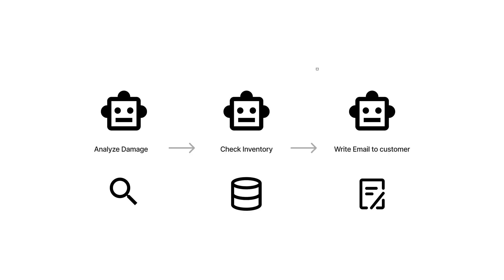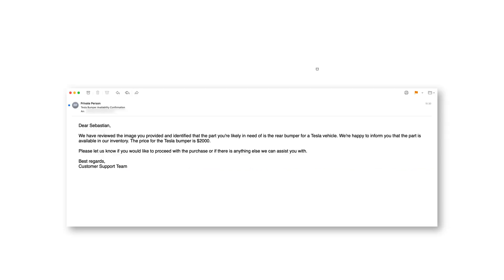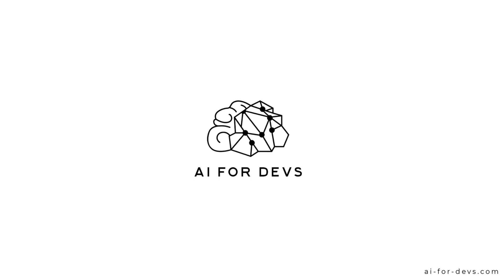In the upcoming parts of our tutorial, we will further enhance our auto-gen setup. We will provide the agents with access to a real database to check the availability of spare parts, seamlessly integrated within an auto repair shop's web page. Additionally, we will enable the system to actually send the composed emails to clients, completing the circle of automated customer interaction and service facilitation. Don't forget to like and subscribe if you want to stay updated on new videos. For the complete video series, make sure to visit AI4Devs.com.